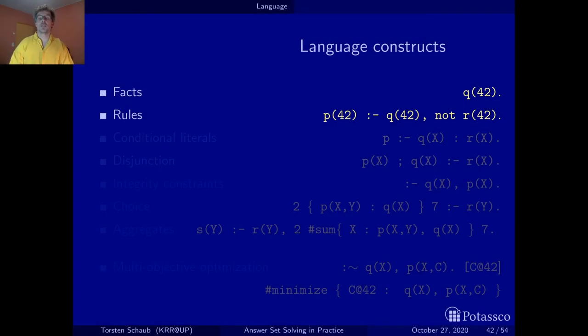The first language construct I want to talk about is called conditional literal. Conditional literals are literals with a condition attached to them. Here is one in the body, marked by the yellow font. It can be read as q of x if r of x. It's a conditional, and logically you can interpret this as an implication, just as this guy. This is the principal implication of the rule, and this would be a nested implication.